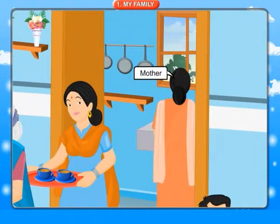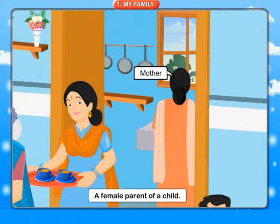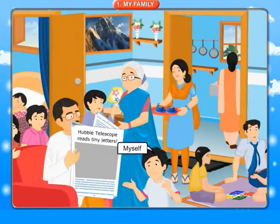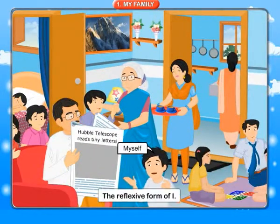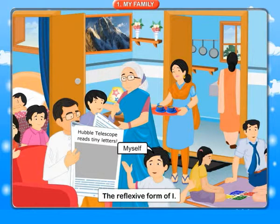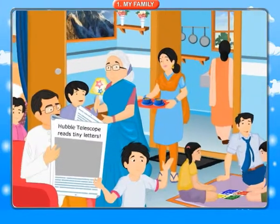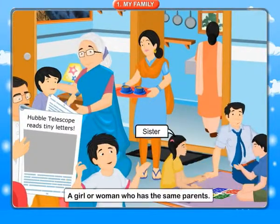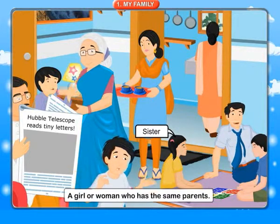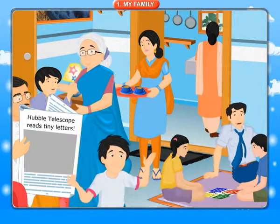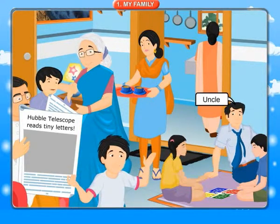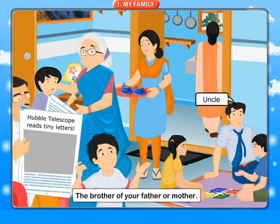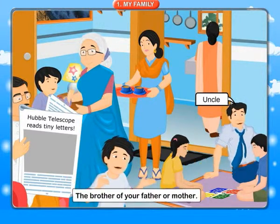Mother: a female parent of a child. Myself: the reflexive form of I. Sister: a girl or woman who has the same parents. Uncle: the brother of your father or mother.